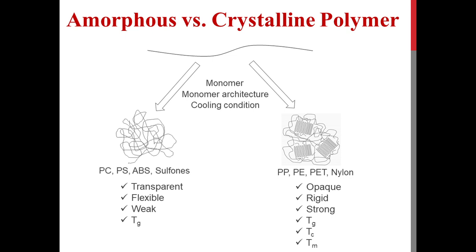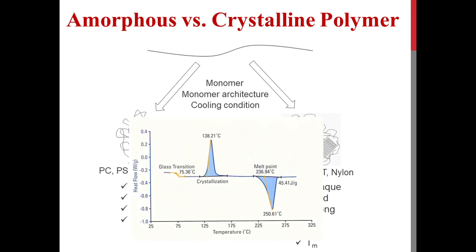If we are not sure whether a product is made of amorphous or crystalline polymer, we can measure their thermal properties using DSC. In DSC, an amorphous polymer shows only a glass transition, which is the property of the amorphous phase. Since crystalline polymers have both amorphous and crystalline phases, they show both glass transition and melting behavior. In addition, crystalline polymers also show a crystallization point, which is the temperature at which crystals are formed.